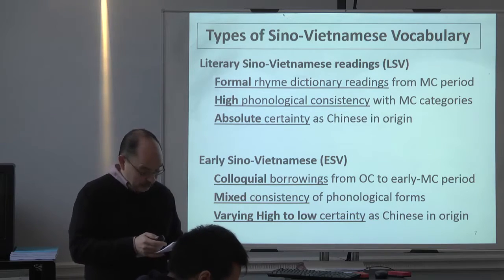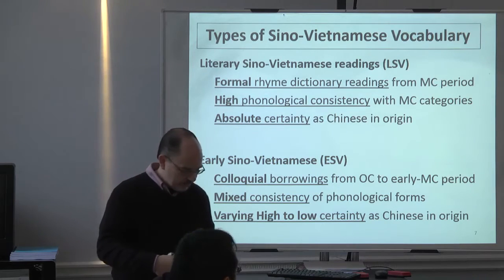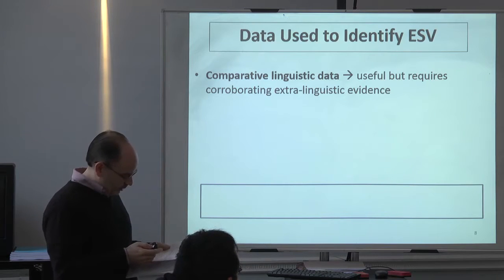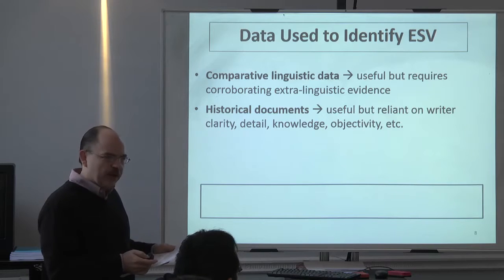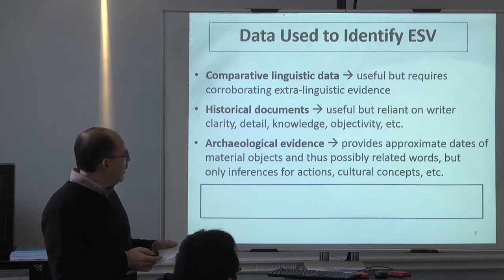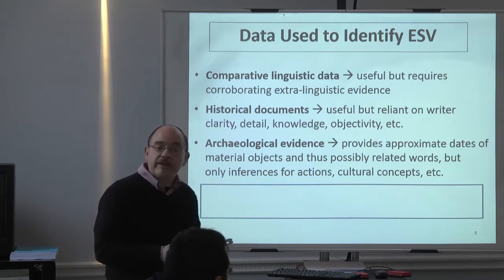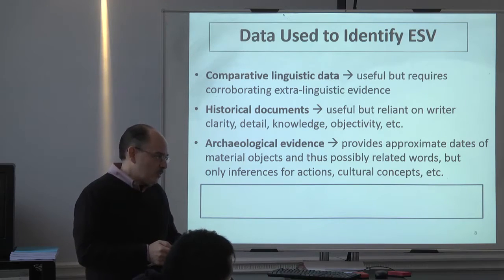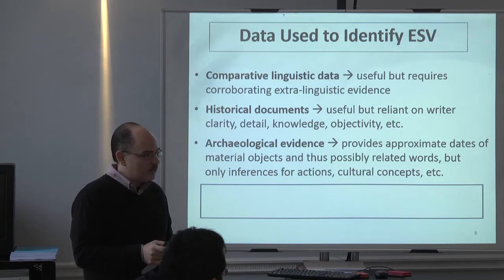We need some extra-linguistic evidence to deal with the inconsistencies — historical and archaeological evidence. The kinds of data are: comparative linguistic data, as I've shown in those instances of words for metals; historical documents, specifically the Chinese historical documents; and of course the archaeological data, which gives us approximate dates of material objects. As far as associated actions and cultural concepts, we can only make inferences. Intangible items are harder to deal with, but certainly for ethno-historical purposes you keep the inferences in mind.